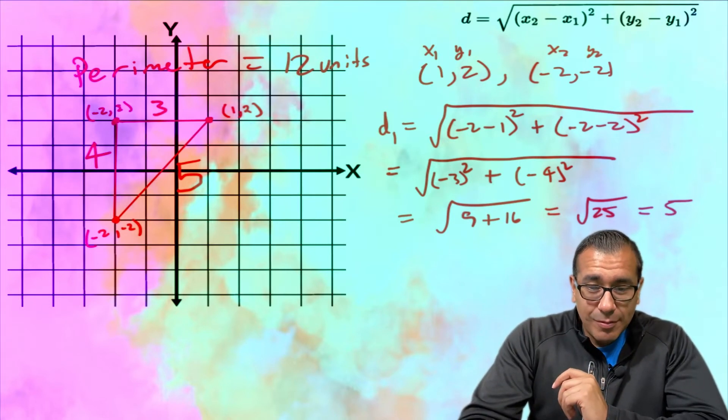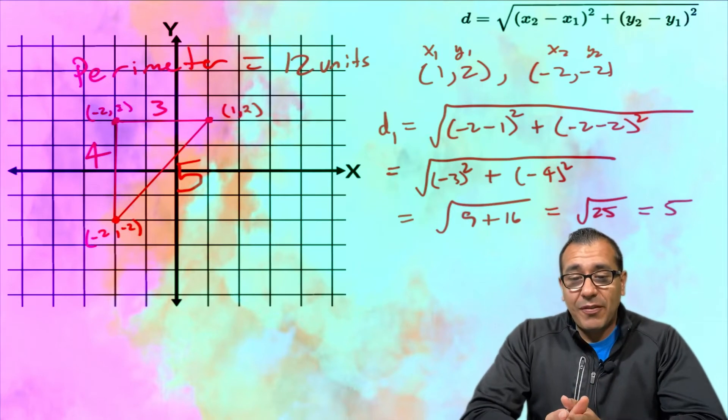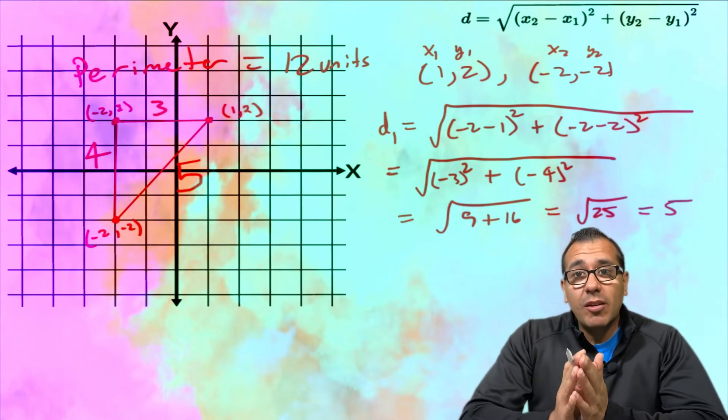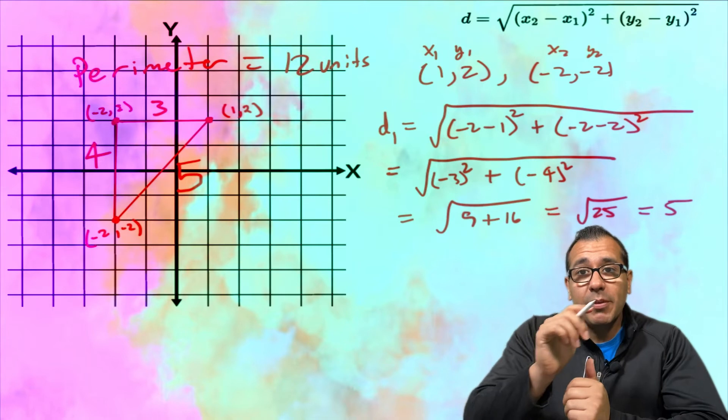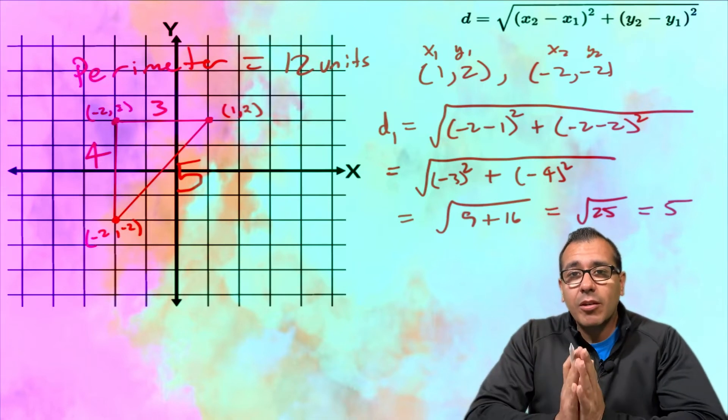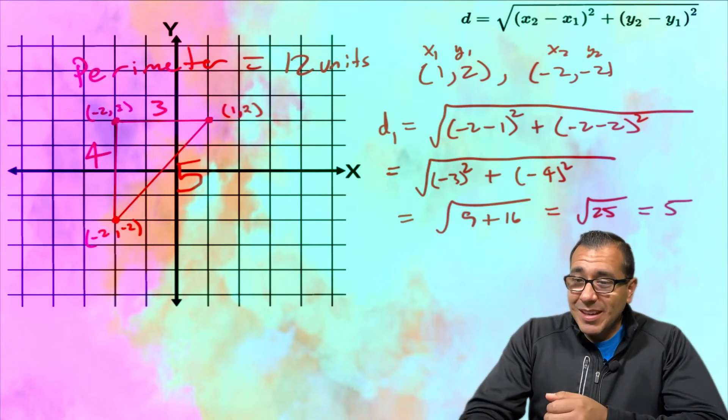So check this out. What we're gonna do and what we're gonna need is if they give you these points on this graph and they say these points make up a triangle and they want you to find the perimeter, the distance around that triangle, what you're gonna need is the distance formula.